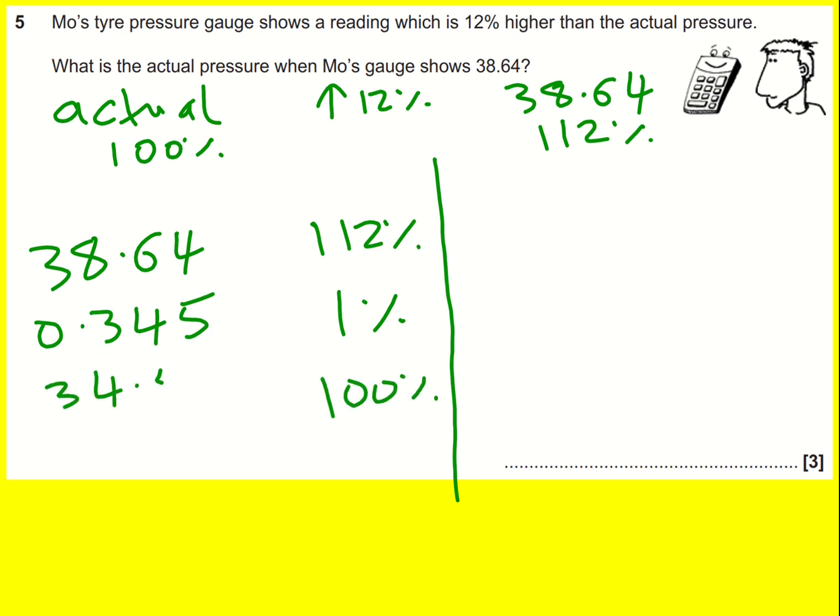And that is the answer. Method two is to basically use multipliers so actual times the multiplier will equal the new value or in this case 38.64.